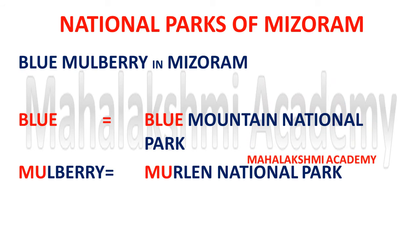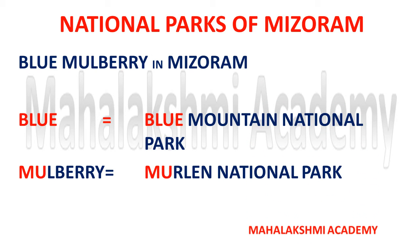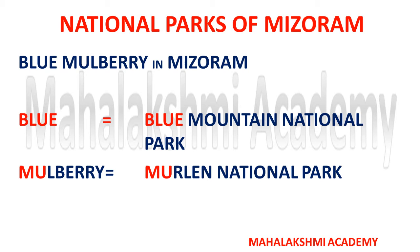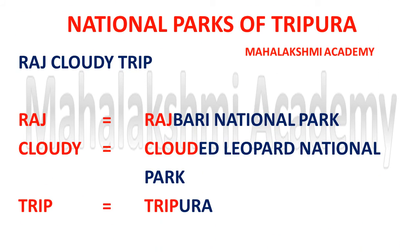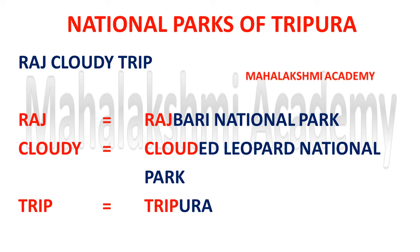Next are the national parks situated in Mizoram. The short code is: 'Blueberry in Mizoram.' Blueberry is found in Mizoram. 'Blue' stands for Blue Mountain National Park, and 'Mulberry' will remind you of Murlen National Park. These are the two national parks in Mizoram, learned with the short code 'Blueberry in Mizoram.'